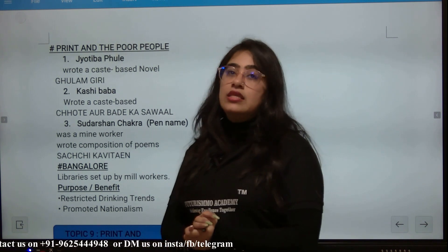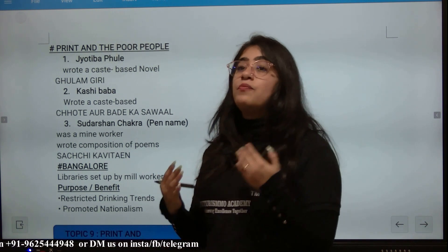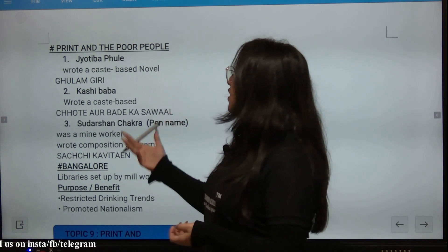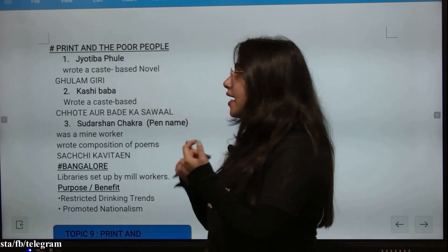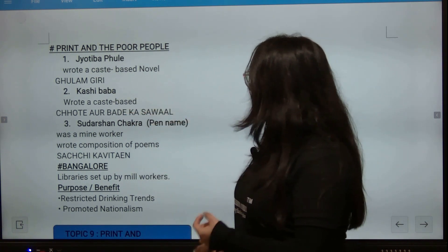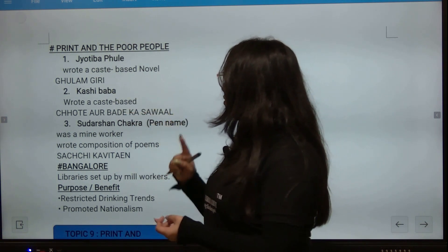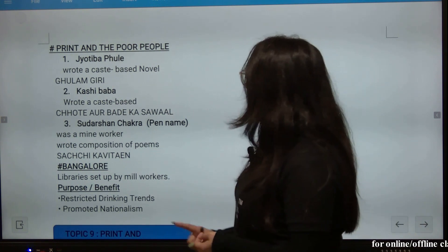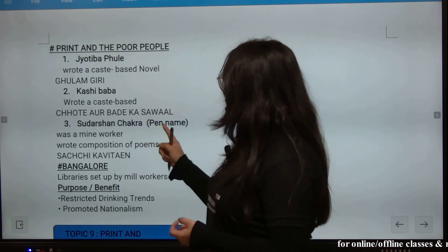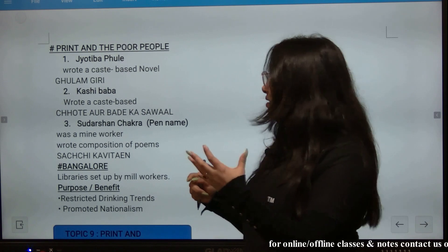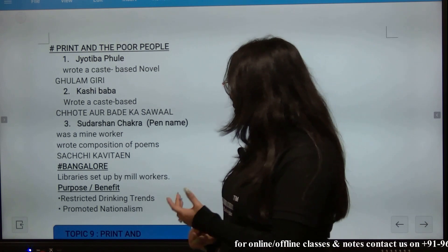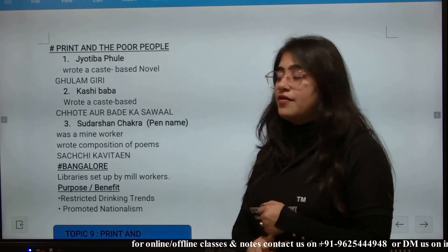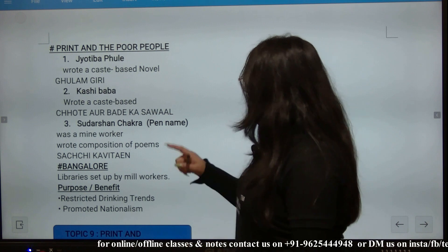Slowly, printing for poor people also started. Jotiba Phule wrote about caste-based oppression in his work Ghulamgiri. Kashibar also wrote a caste-based work on questions of inequality. Darshan Chakra — a pen name — was a mine worker who wrote a book of poems called Sachi Kavita.